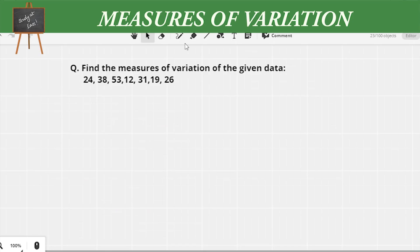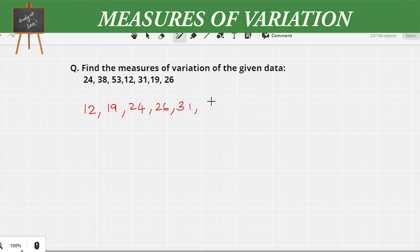Let us solve another question. Find the measures of variation of the given data. The numbers are 24, 38, 53, 12, 31, 19, and 26. The first step is to write the numbers in ascending order from least to greatest: 12, 19, 24, 26, 31, 38, and 53.